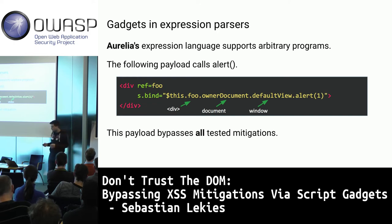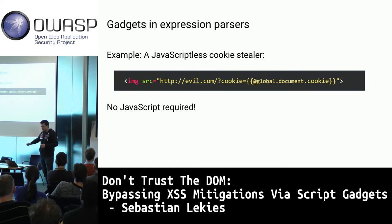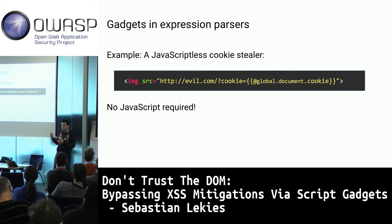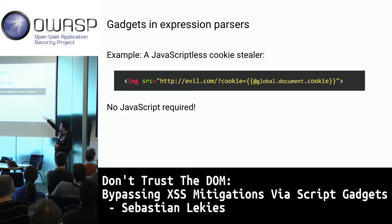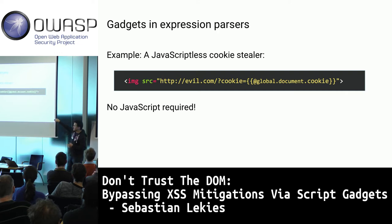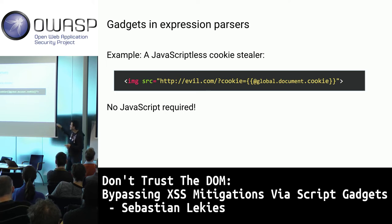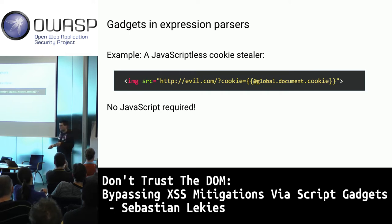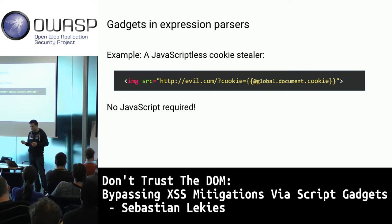We can do more. Here's a cookie stealer that is completely JavaScript-free. Instead of inserting a script with document.write, you just insert an image tag with a URL and tell the Aurelia framework to fill in the cookie value. You reference the global object (window), then document, then document.cookie — all in Aurelia's domain-specific language, no JavaScript involved.